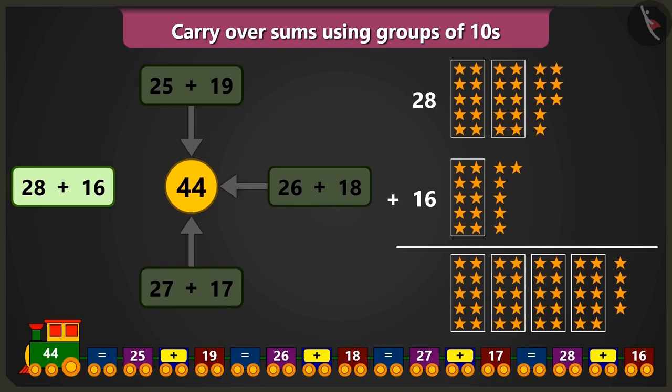Yes. So, here also, there are 14, which means 1 tens and 4 ones. Yes. So, 1, 2, 3, 4 tens and 4 ones, that are a total of 44.